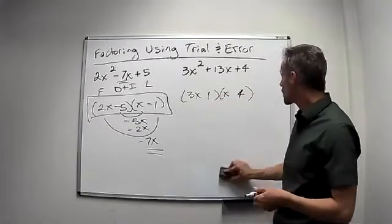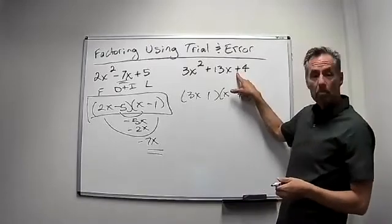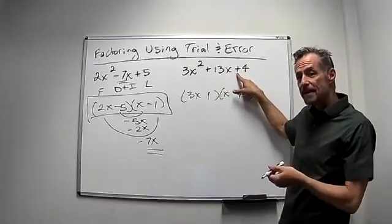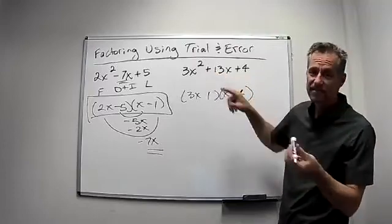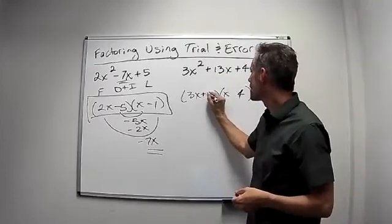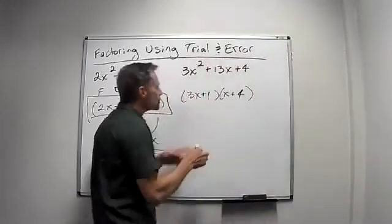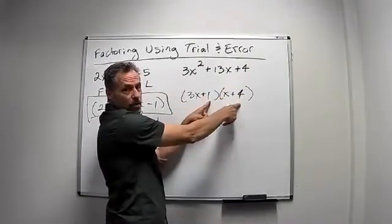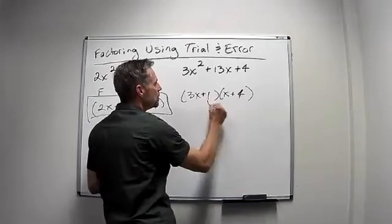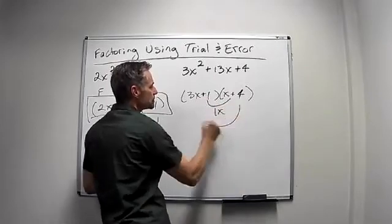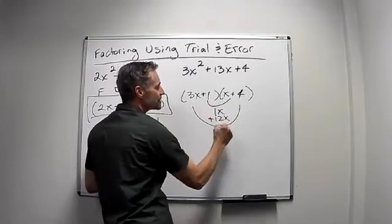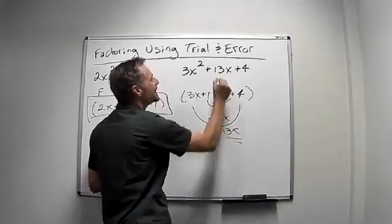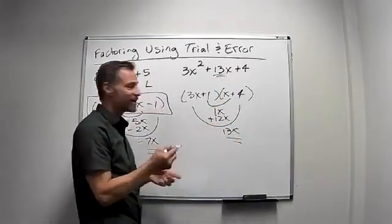Again, let's check to make sure that works. Multiply to a positive, so they're both the same sign. This time, they add to a positive, so both have to be plus. Well, there's my 3x squared, there's my plus 4, so that works. Let's check the middle. Well, 1x plus 12x, that's 13x. That's my middle term. So again, I factored correctly.